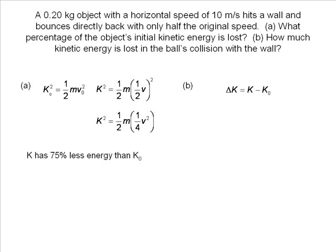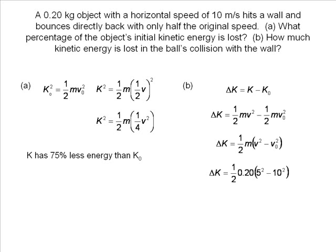The change in kinetic energy is equal to the final kinetic energy minus the initial. We expand our equation to include our variables. We factor out the one-half m and have the equation for finding the change in an object's kinetic energy. We input our values and find the change in kinetic energy to be negative 7.5 joules.